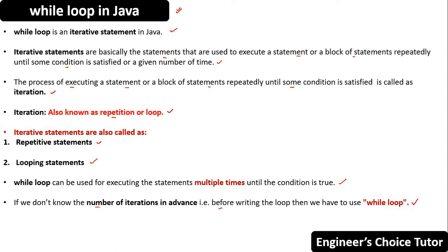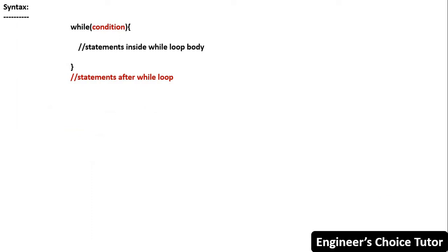Now let's see the syntax for while loop. We have the 'while' keyword, then a condition, then statements inside the while loop body, and then statements after the while loop. If the condition is true, then the statements in the while loop body will execute; otherwise, control comes out of the while loop and the statements after it will execute.